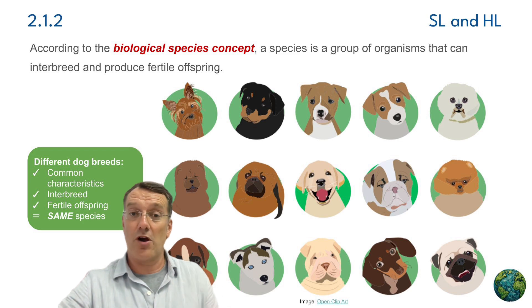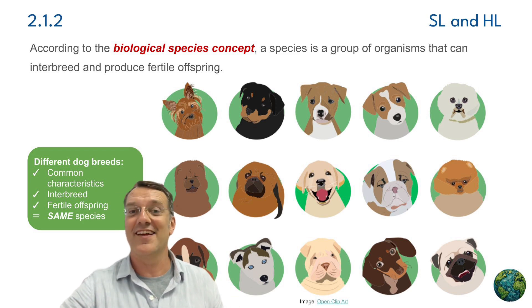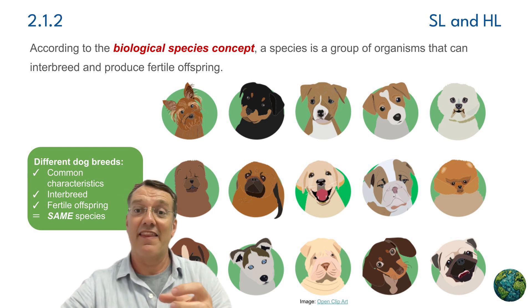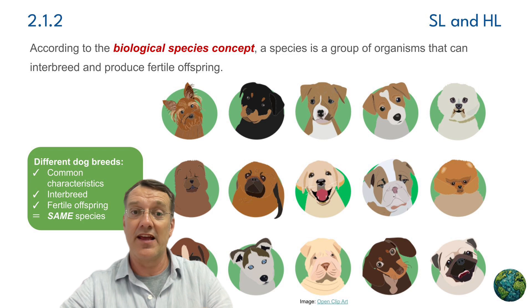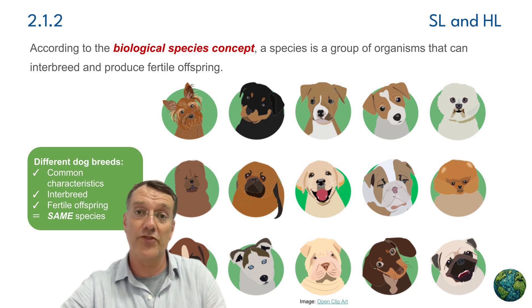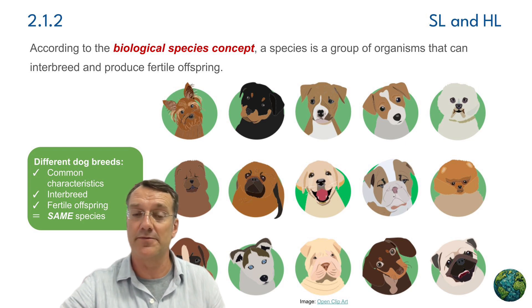Different dog breeds, despite having really varied appearances, all belong to the same species because regardless of their breed, they can interbreed and produce puppies that can also interbreed and produce offspring. That's why we say that their offspring are fertile.